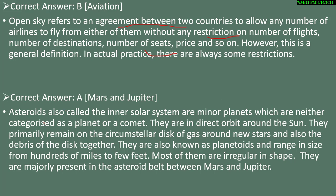Mars and Jupiter is the correct answer for question 12. Asteroids, also called the inner solar system, are minor planets found between Mars and Jupiter. They are neither categorized as planets nor as comets and are in direct orbit around the sun. They also remain in the circumstellar disk of gas around new stars and range in size from hundreds of miles to a few feet.